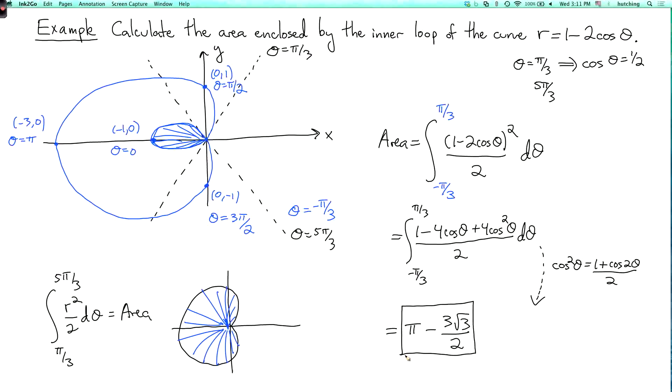And just as a reality check, we should make sure this is positive. We note that the square root of 3 is less than 2. So when I multiply it by 3 halves, I get something which is less than 3 and pi is bigger than 3. So that is indeed positive.